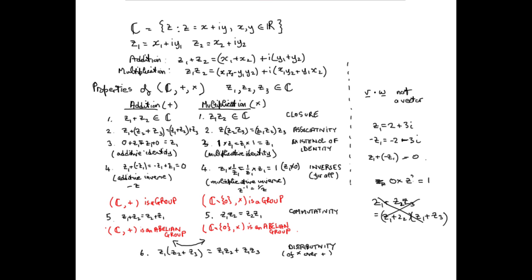Having covered all the relevant properties, we can now say that when all of these properties hold — and they do for the complex numbers under addition and multiplication — we are looking at a field. So the algebraic structure: a set of numbers with two operations obeying all these rules, is called a field. It's a very specialist term in algebra representing a whole structure with a whole set of properties.